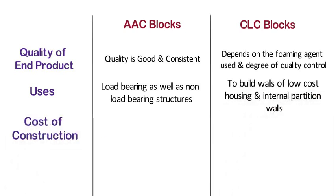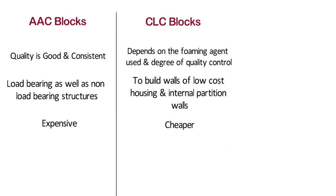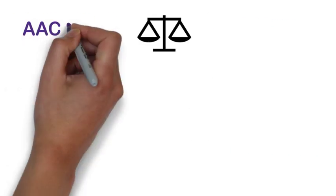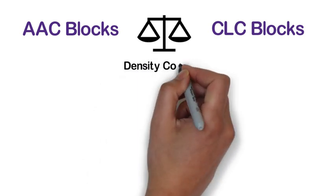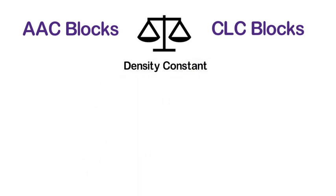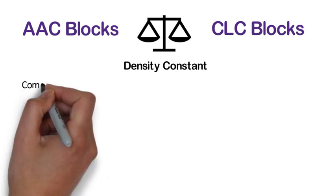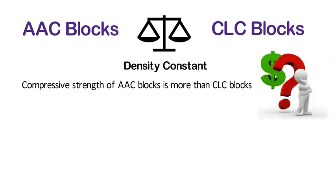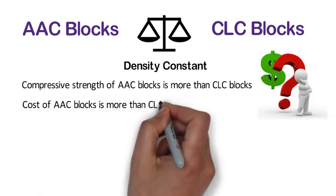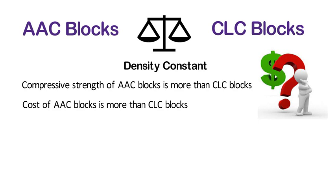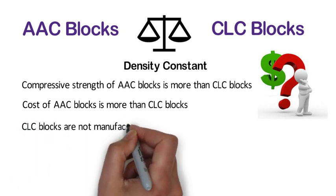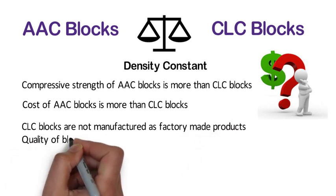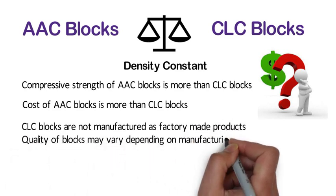Cost of construction. AAC blocks are expensive as compared to CLC blocks. Whereas, CLC blocks are cheaper when compared with AAC blocks. If we compare AAC blocks with CLC blocks by keeping the density constant, then all the parameters are almost similar, except compressive strength — the compressive strength of AAC blocks is more than CLC blocks. The only drawback is cost: AAC blocks cost more than CLC blocks. Also, unlike AAC blocks, CLC blocks are not manufactured as factory-made products, hence quality of blocks may vary depending on manufacturing units.